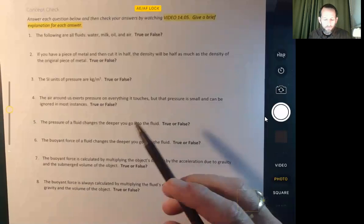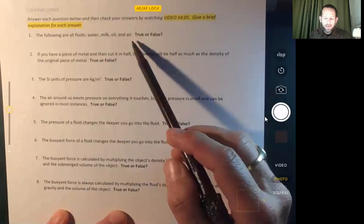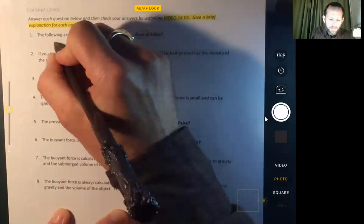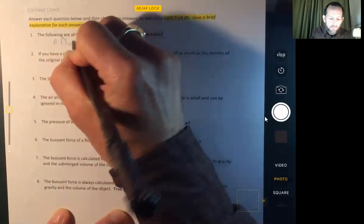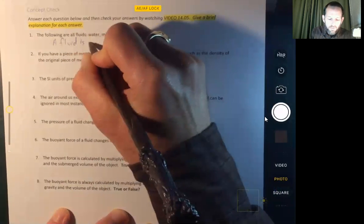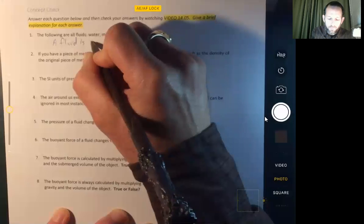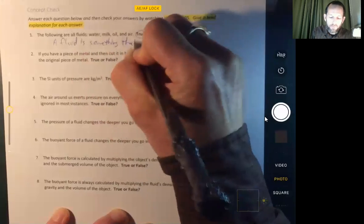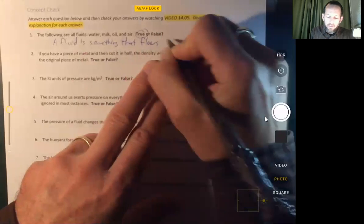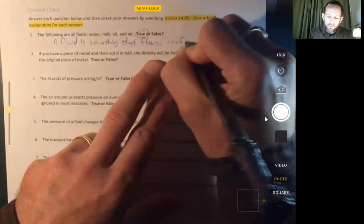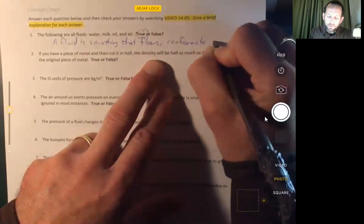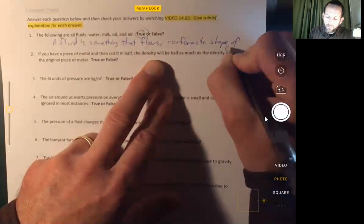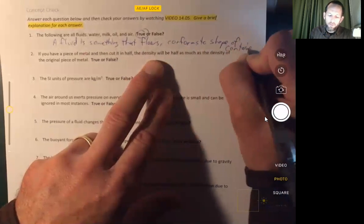The following are all fluids: water, milk, oil, and air. That sounds true to me because a fluid is something that flows and conforms to the shape of the container. We're running out of room. All right, so that's true.